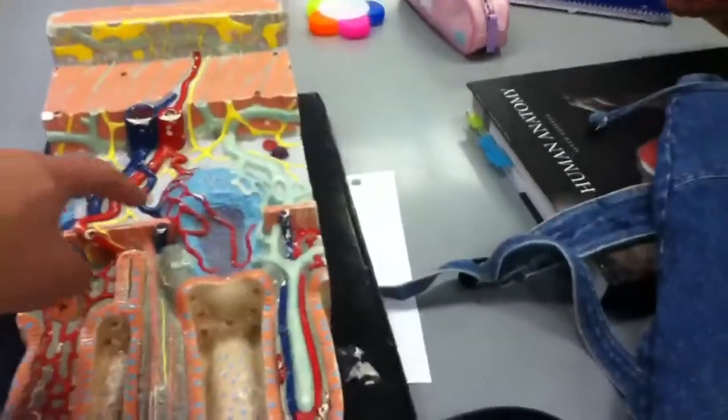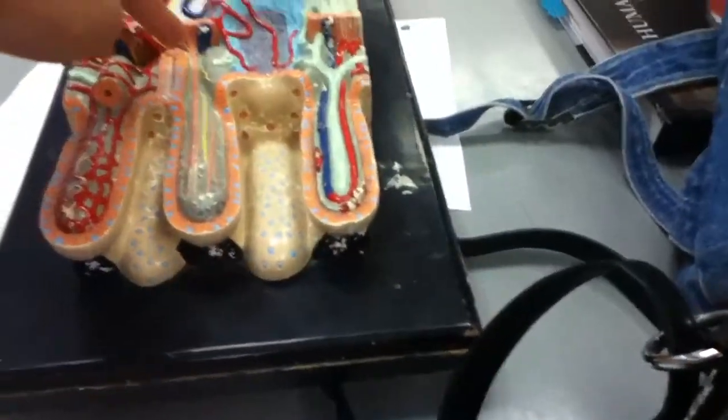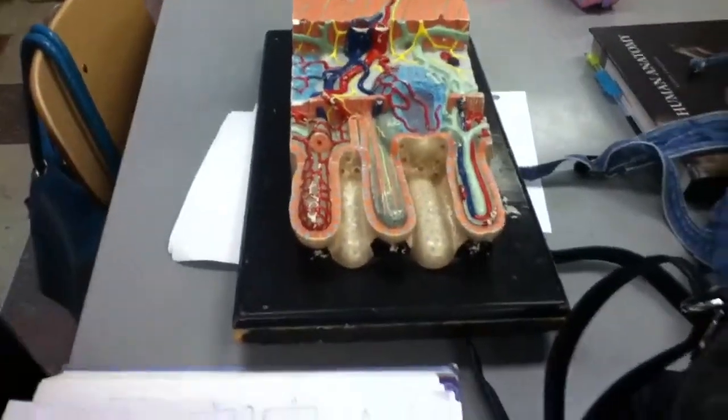What was this called again? The lamina propria. And then there was one more? Oh, this one. That's the intestinal crypt, or the intestinal gland.